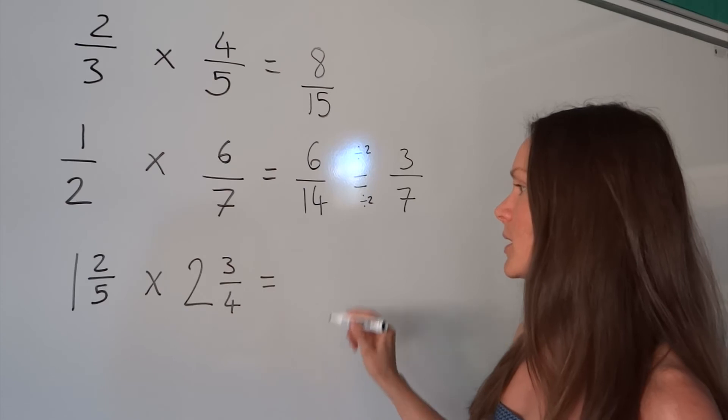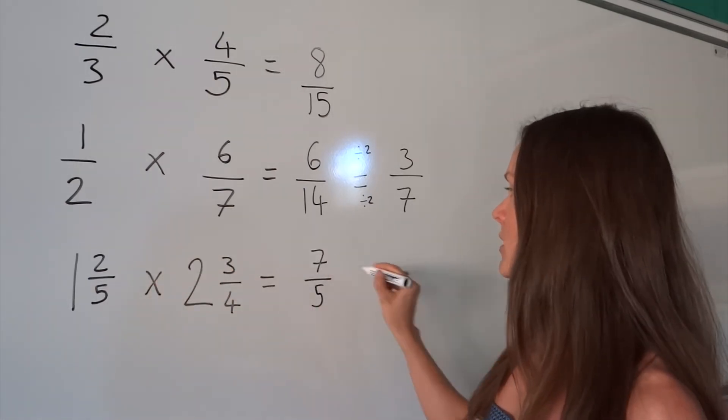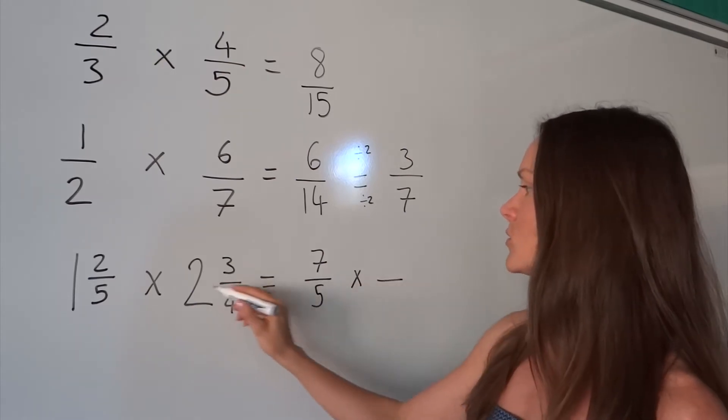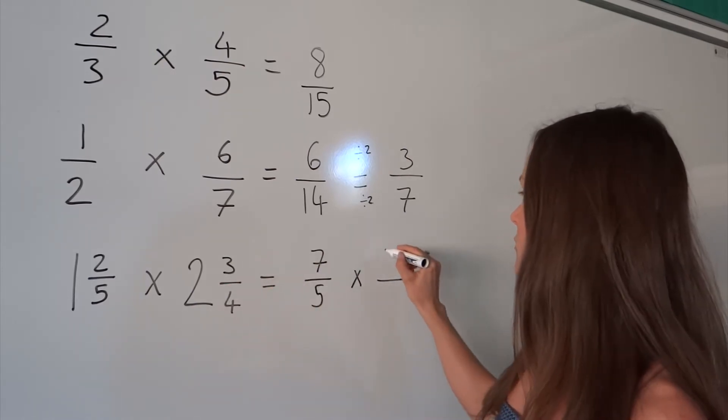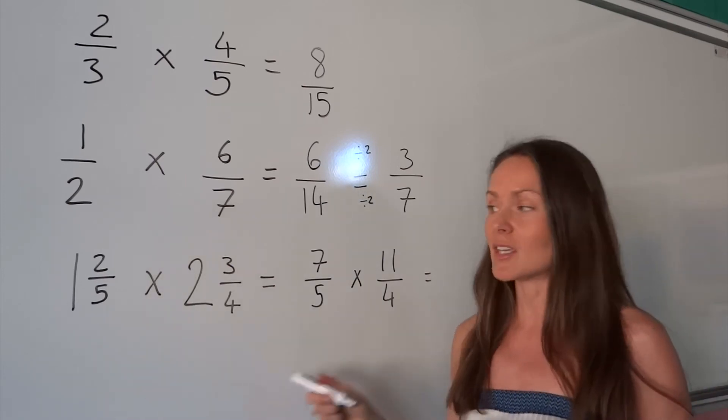So to turn this one into an improper fraction, 1 times 5 plus 2 is 7. And the second one, 2 times 4 is 8 plus 3 is 11. OK, so first you turn the mixed numbers into improper fractions.